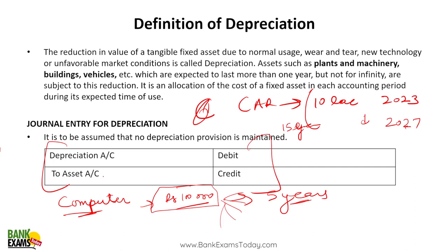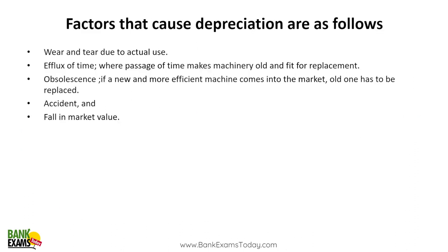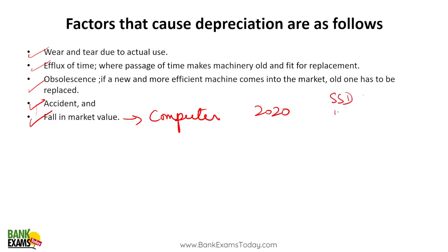We will apply depreciation for that. According to the income tax department, they have given different rates for different types of assets. There is a concept of depreciation to find the true book value of the asset, and it helps in taxation as well. For fixed assets we use depreciation in the books of account — it goes as a credit to the asset account, so the asset's value gradually decreases in the books.